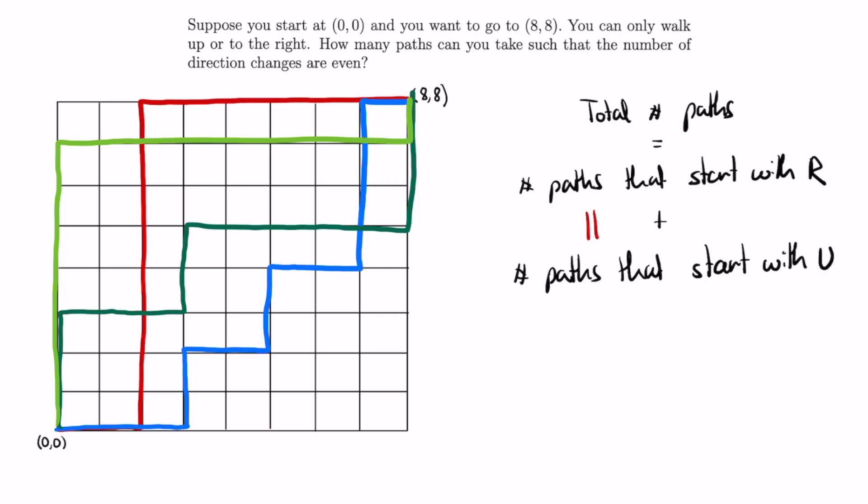But these two cases are exactly the same. You could imagine mirroring the whole grid about the diagonal to get one scenario from the other. So we can actually just find the number of paths that start with R, and then multiply that number by 2.